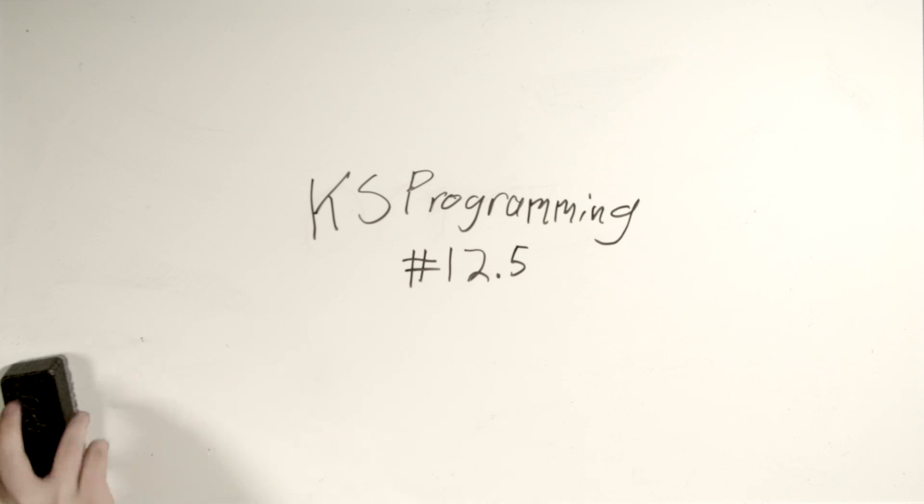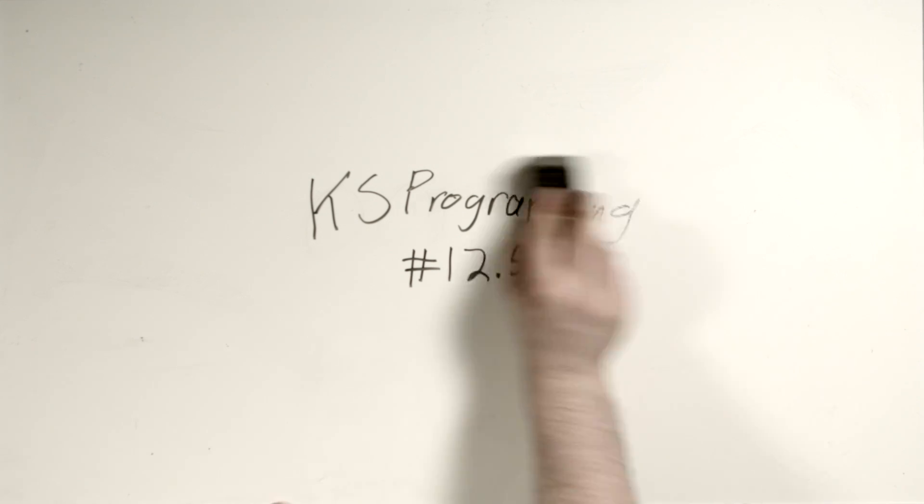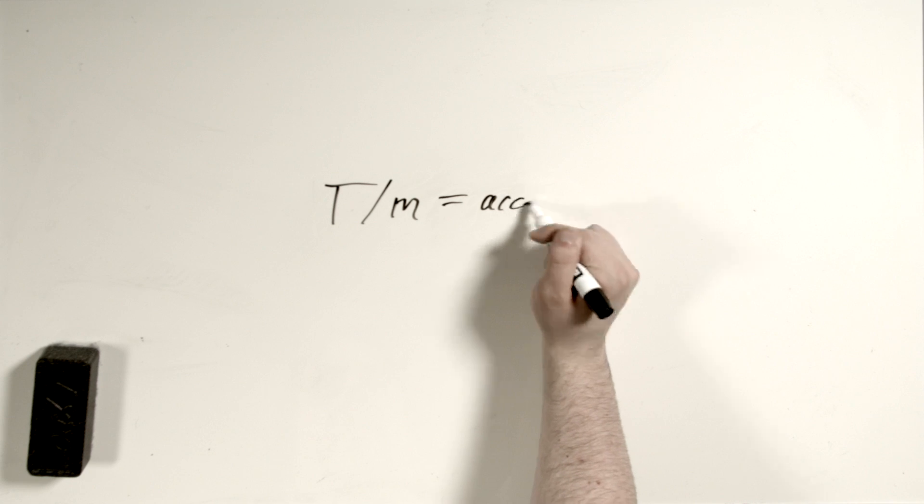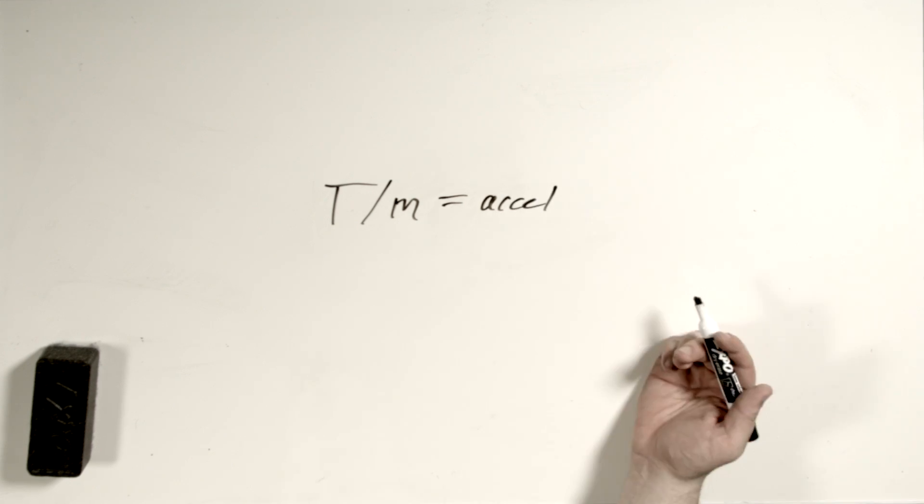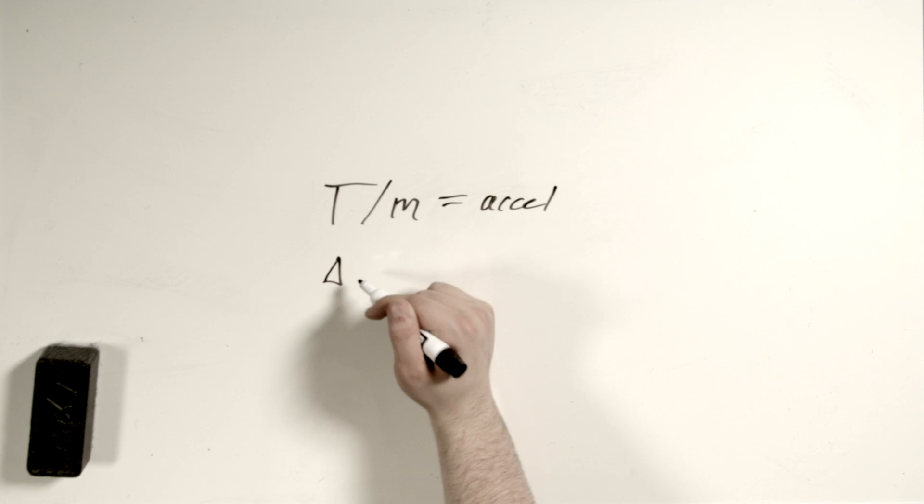Hello, Kevin here, and today I am making a supplementary KSP Programming episode because a couple of you pointed out that in the last video, I screwed up when we were estimating the time it would take to complete a particular maneuver. What we did is we calculated our maximum acceleration by taking the thrust of the engine and dividing it by the mass of our ship. We said that's our acceleration, and then we'll go ahead and just divide delta V by acceleration, which kind of makes sense, right?